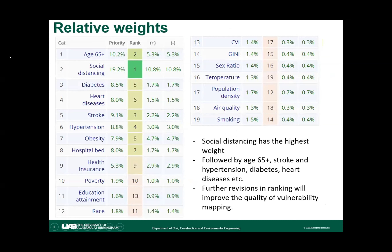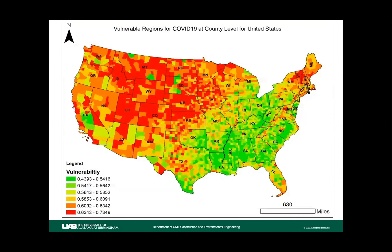After the pairwise comparison matrix, we produced the final rankings. Social distancing was ranked highest, followed by elderly population, stroke, hypertension, diabetes, and heart disease.